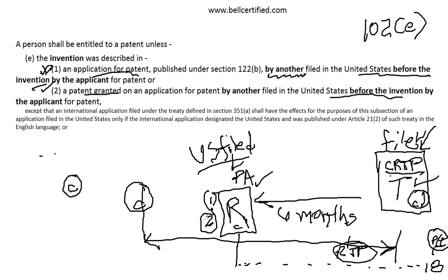Similarly with a patent — the second example — if a patent was filed in the U.S. before the invention date and issued at any time (it can issue before or after the constructive reduction to practice, as long as it was filed before), the other side can again argue: we had conception before this prior art event, and our diligence started before the event and continued until we had a constructive or actual reduction to practice. Therefore, this is not prior art. But if they can't prove that — if they can't beat your date — then it is prior art.